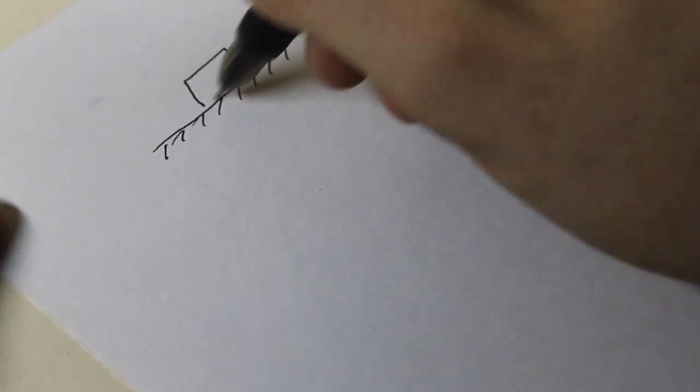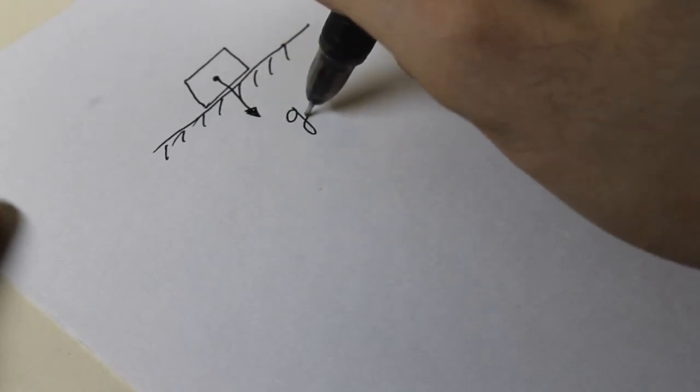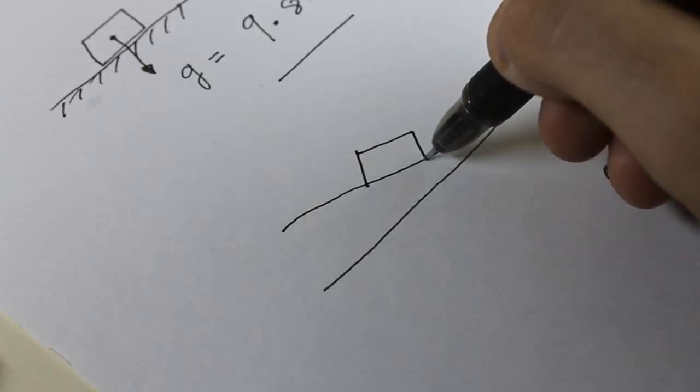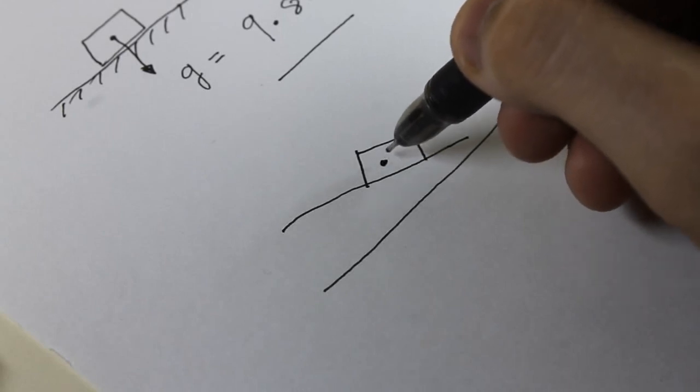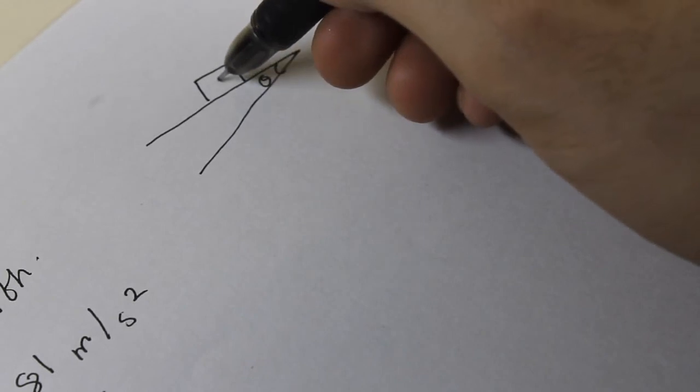So let's go to some basics. Earth on its surface pulls everything with an acceleration of 9.81 meters per second square towards itself. And this acceleration will always be perpendicular to the surface of the earth. So we can use this fact to our advantage and calculate something known as components.